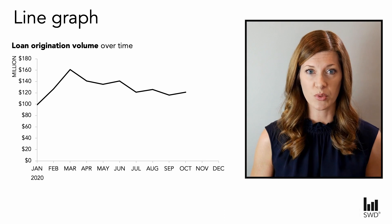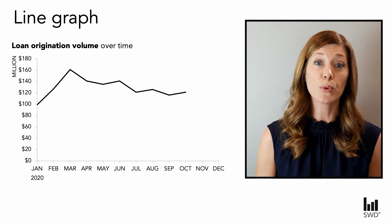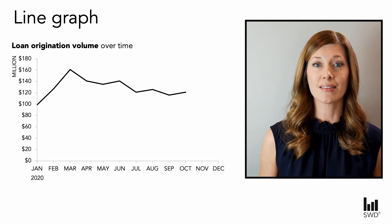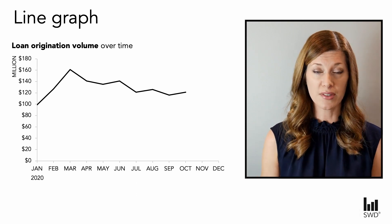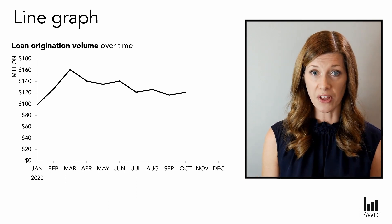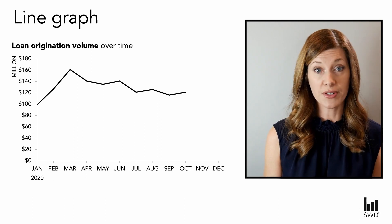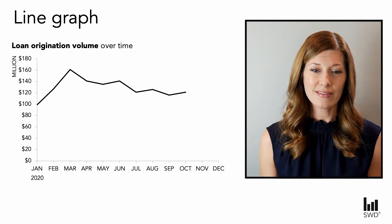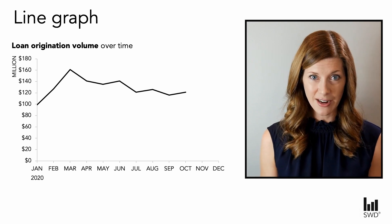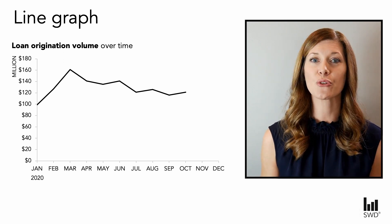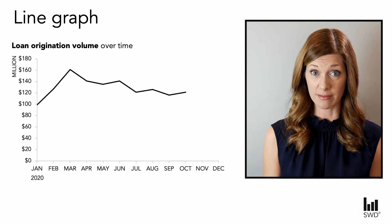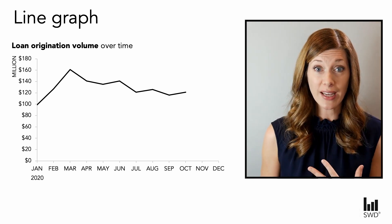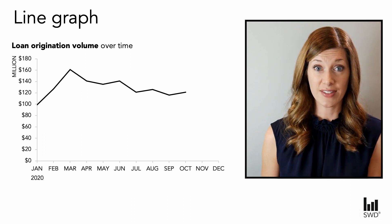Let's get more specific. Here we're plotting origination volume. Imagine you're working at a bank — this is the dollar amount of loans being booked in your portfolio on a monthly basis over time. Any time we're graphing data over time, we have a natural built-in construct for storytelling: the chronological story.